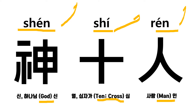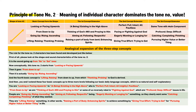Why? The principle of tone number two: the meaning of each individual character dictates or dominates the tone number two. From the shape of tone number two, we have derived four major concepts: looking or facing upward; from down to up, going up, rising, or ascending; lifting, raising; and thanking and praising. Tone number two is the sound going up from a lower to a higher tone.